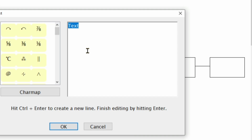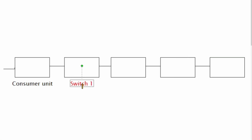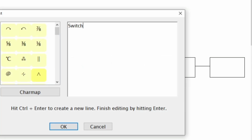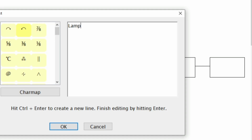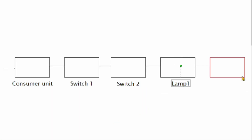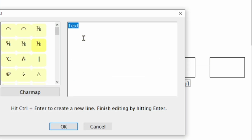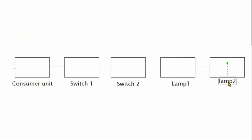The second block is one of the two switches, so we can call this switch one. Then this will be the second switch, which we can name switch two. This will be one of the lamps, so we call it lamp one. Then the last block will represent the second lamp, and so that will be lamp two. So we have a consumer unit, switch one, switch two, lamp one, and lamp two.